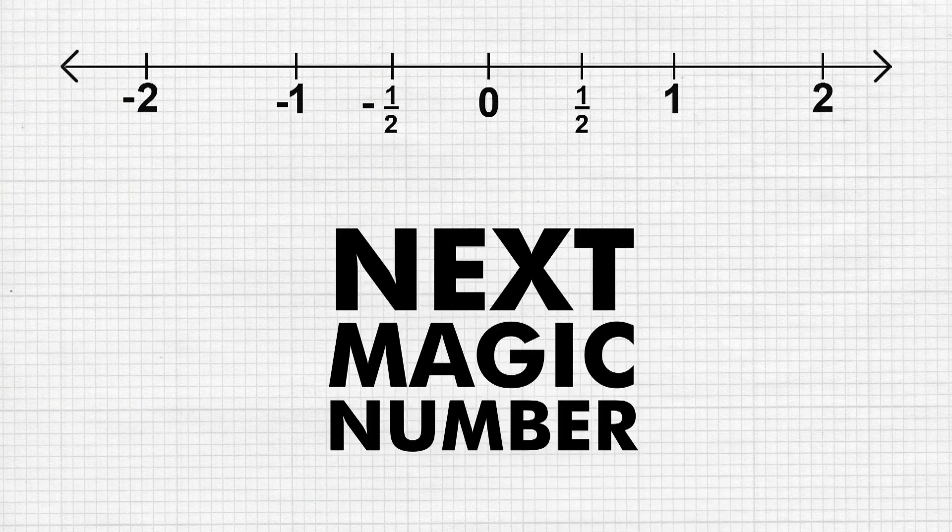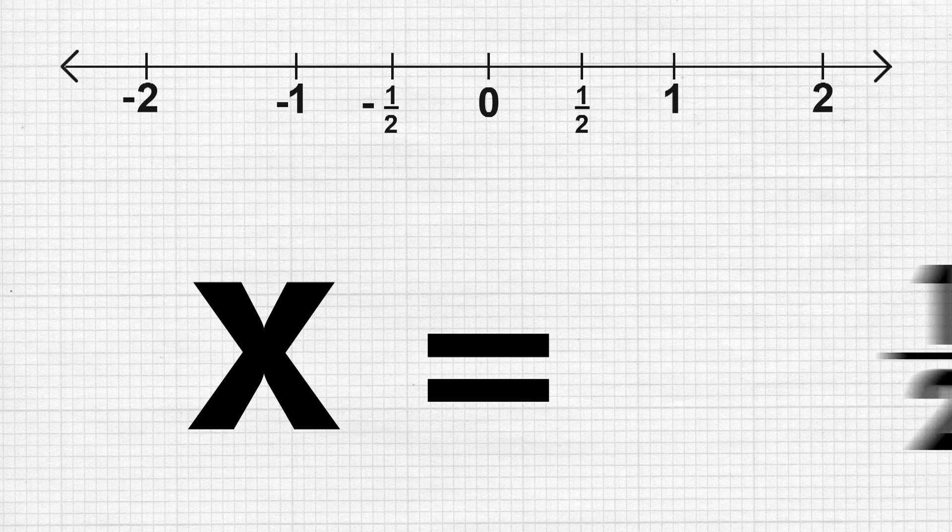Magic 7 numbers. The next magic number we take is x = 1/2, i.e., x = 1/2.